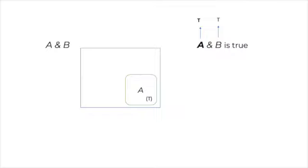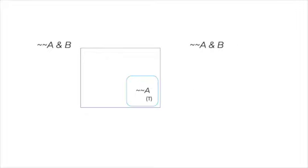As we know, not-not-A is equivalent to A. So if A is true, so is not-not-A. So when we substitute not-not-A for A in the main sentence, the resulting sentence is not-not-A and B, which, as you might already have guessed, is true.